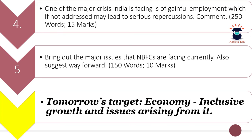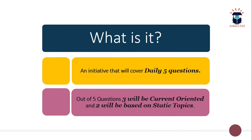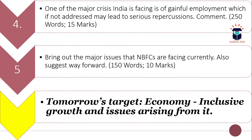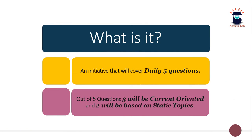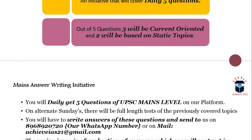Tomorrow's static target is economy — that is, inclusive growth and issues arising from it — shown on your screen. For those seeing our video for the first time, this initiative gives you five questions daily: three from the current affairs (dynamic) part and two from the static part. We have prepared a 99-day timetable proceeding systematically, where daily you are given a static target and two questions are framed from that particular static topic.